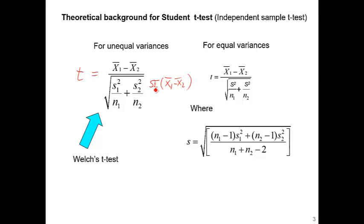Standard error shows the accuracy of a mean estimate. We want the standard error to be small, and we want the difference to be larger. Therefore, a higher t-value linearly converts to a smaller p-value.